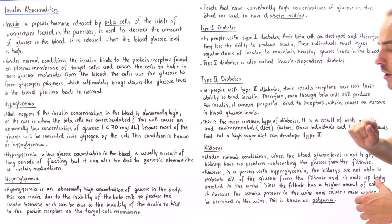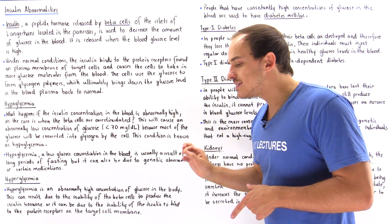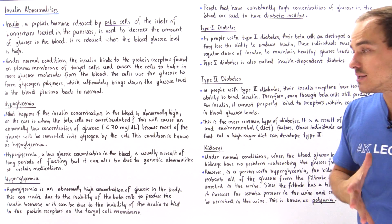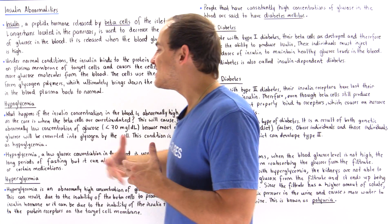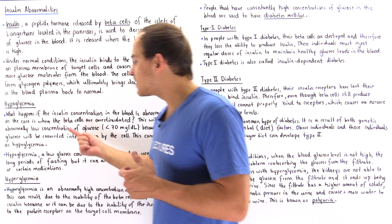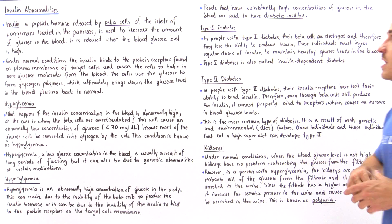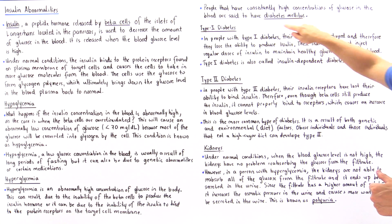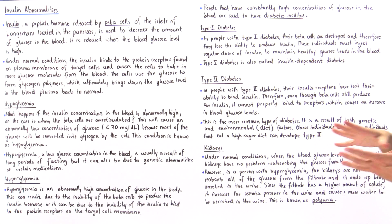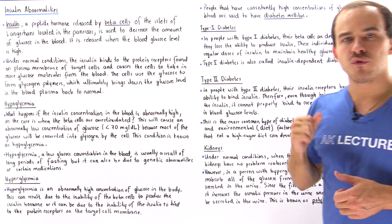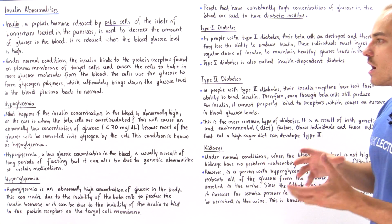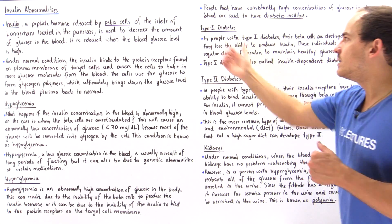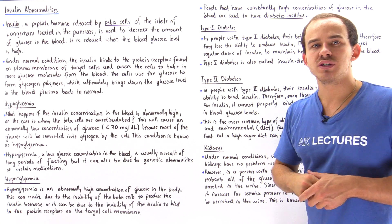People who consistently have a high concentration of glucose in their blood — who consistently experience hyperglycemia — are said to have diabetes mellitus. Diabetes comes in two forms depending on the nature of the insulin abnormality: type 1 diabetes and type 2 diabetes.